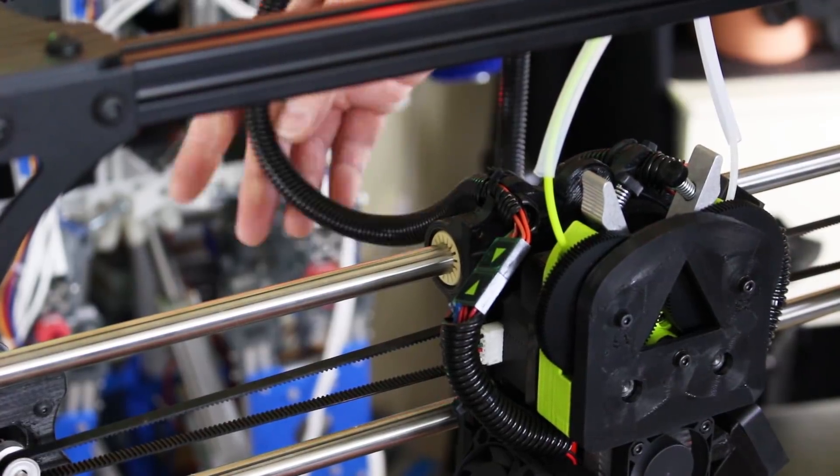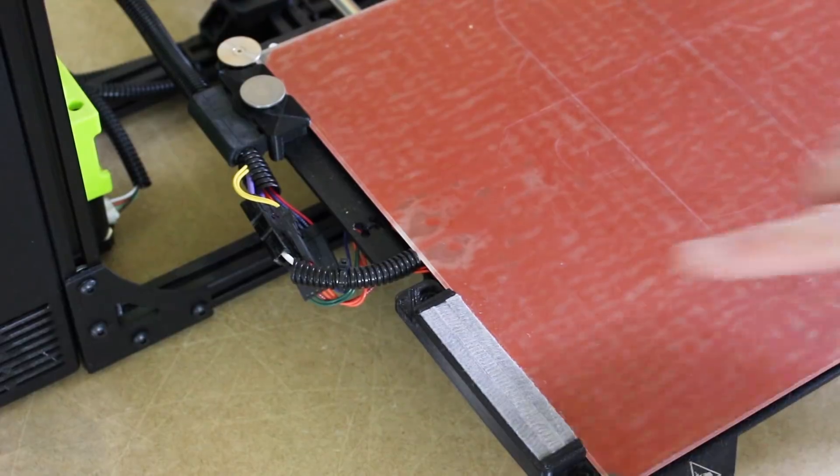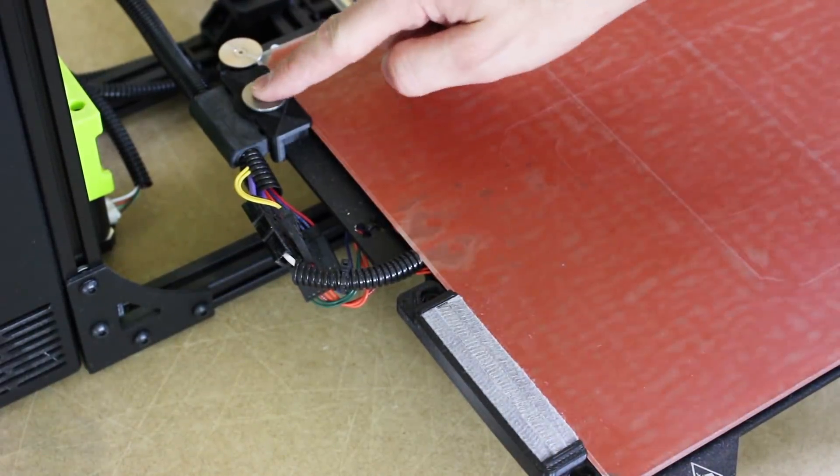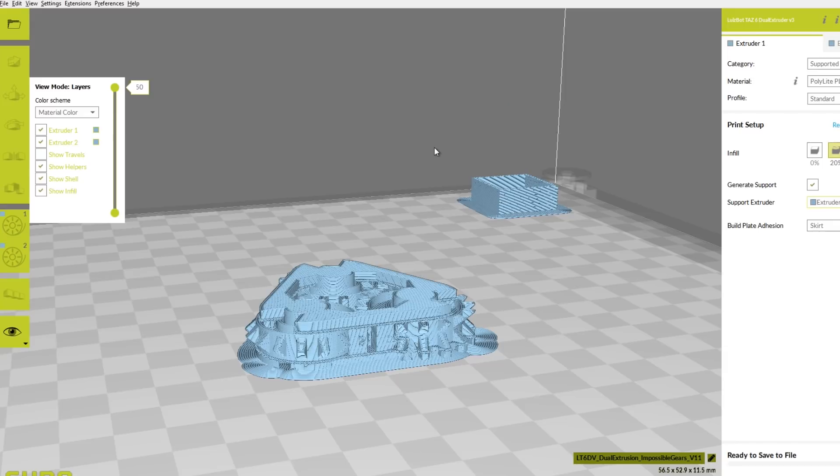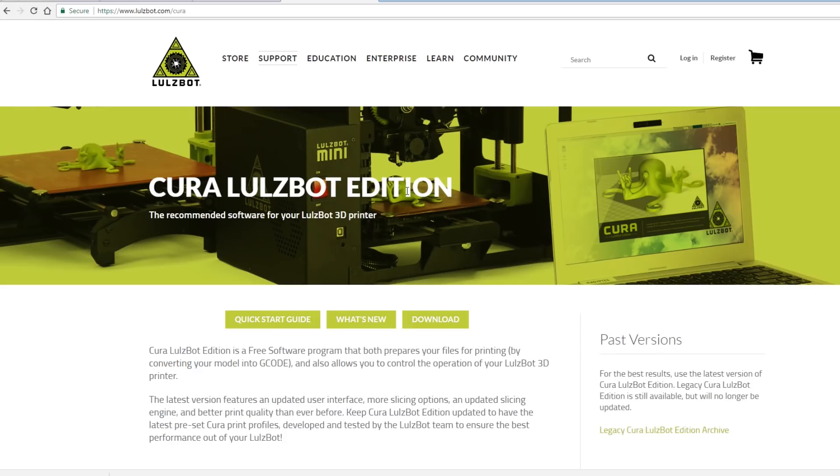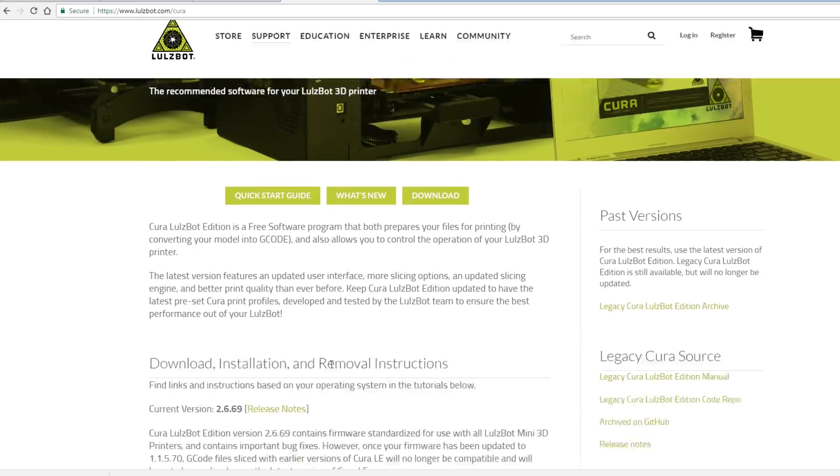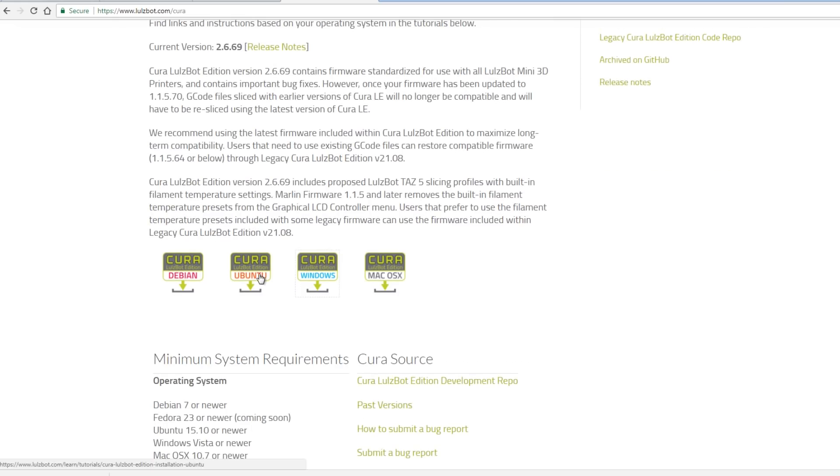So I've installed my extra extruder cable that's plugged into the control box, and I've installed the extra-wide wiper pad and the little extension on the Z end stop. I've upgraded the firmware with Cura, and you can get that from lulzbot.com/Cura, and it's free and open-source, and available for a number of platforms, including Debian, Ubuntu, Windows and Mac OS X.